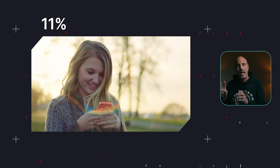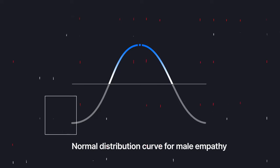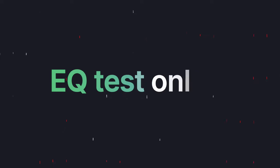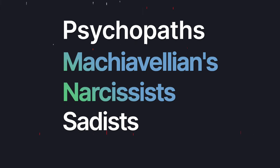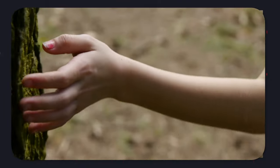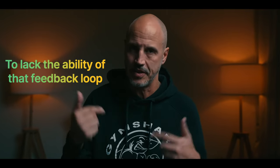Women are about 11% higher than men in empathy. More men score under 30 in empathy, and autism starts from 0 to 30 on the scale. You can test empathy yourself by doing an EQ test online. Autistic people have low cognitive empathy. Psychopaths, Machiavellians, narcissists, and sadists have low affective empathy, and therefore almost completely lack the ability to feel the negative emotions of a person they are hurting.